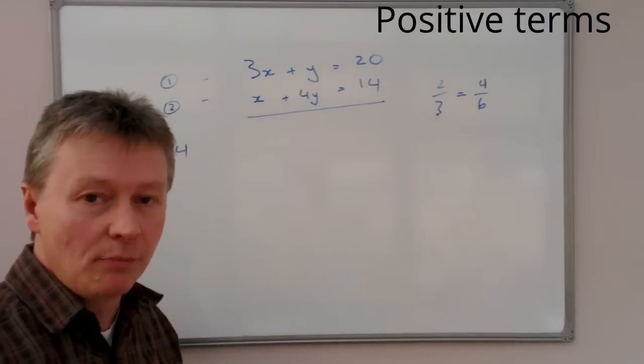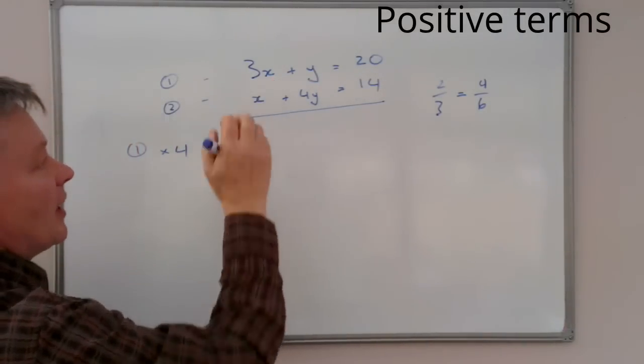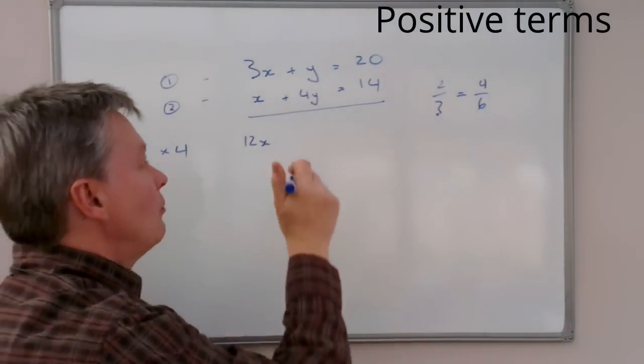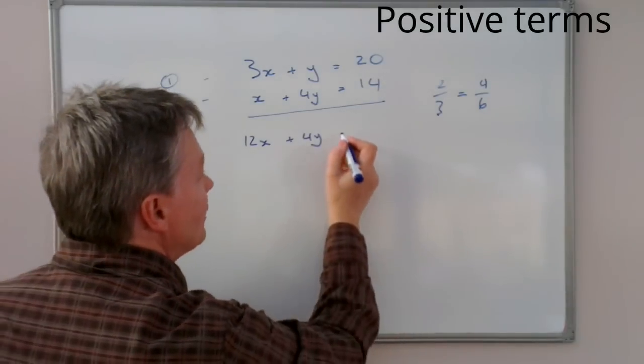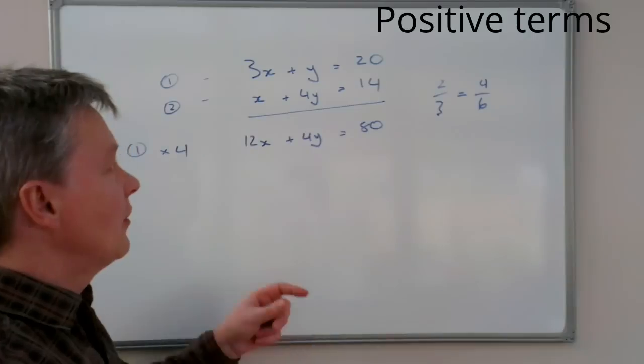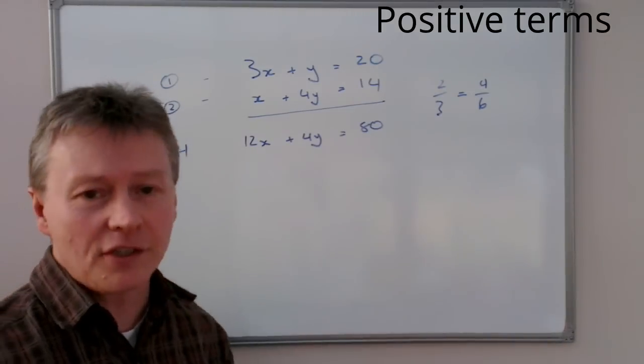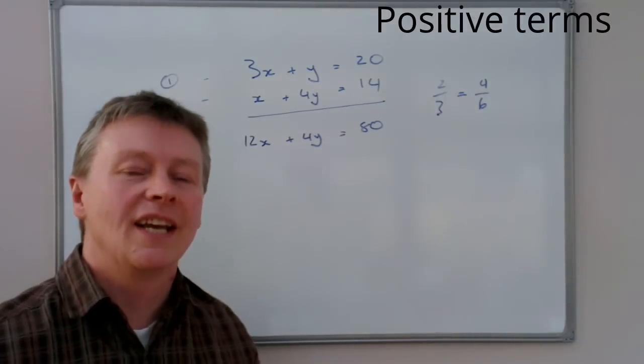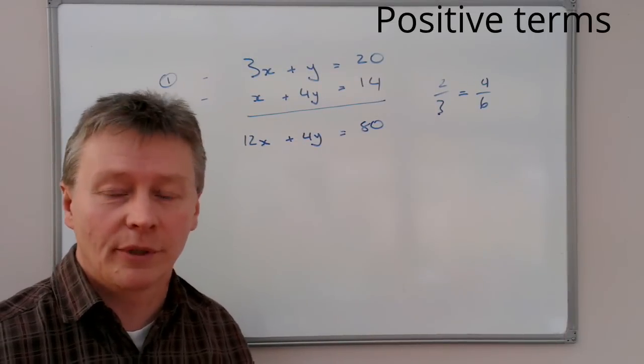Now, each of the terms needs to be multiplied by 4. So, what I get is this 3x becomes 12x. This y becomes positive 4y and this 20 becomes 80. So, I haven't changed, just in much the same way as I have with the fractions, I haven't changed the equation. What I've done is I've just multiplied each of the terms by 4 in order to make my calculations a little bit easier.